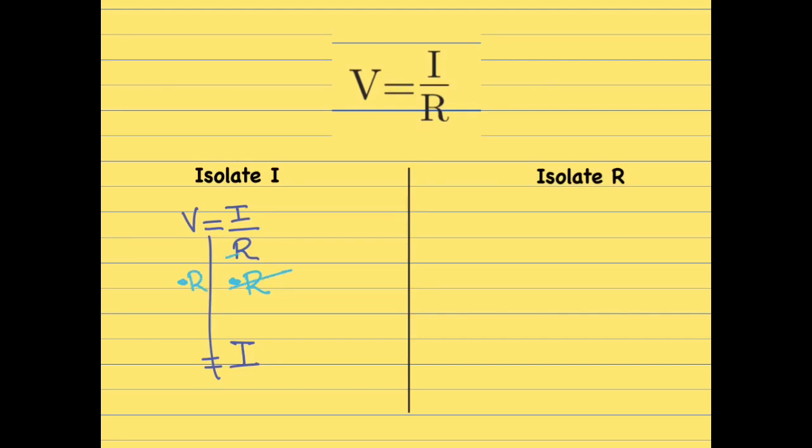R multiplying R dividing, they cancel. The I is alone. And V times R is VR. And that will be our answer as far as leaving the letter I alone in this equation.